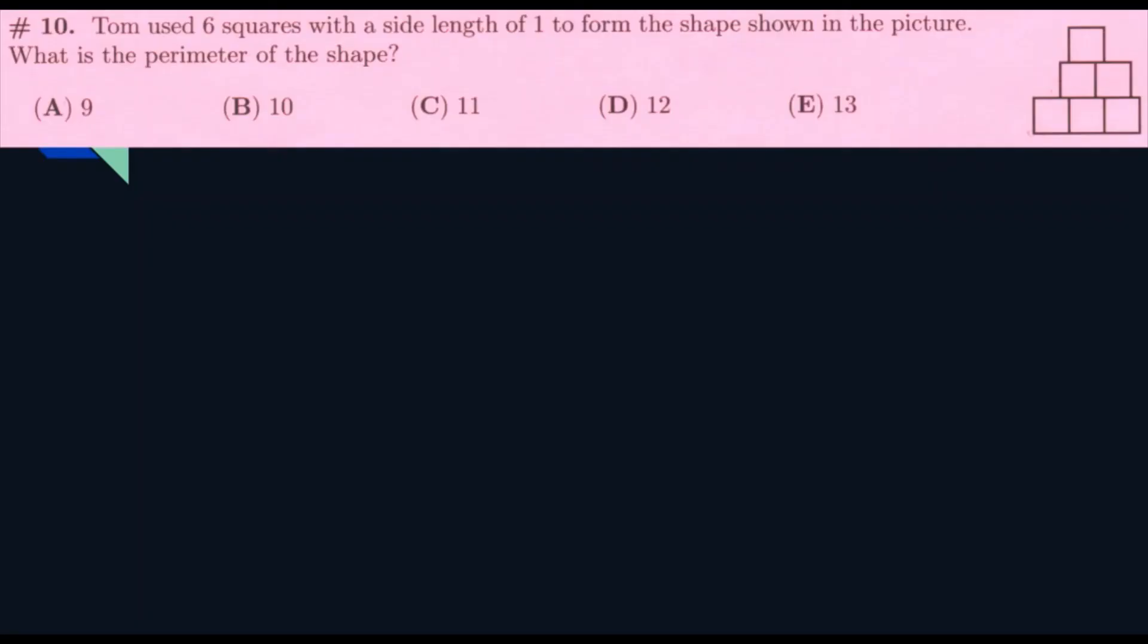Tom uses six squares with a side length of 1 to form the shape shown in the picture. What is the perimeter of this shape? So, it's 3 on the bottom, 3 on both sides, and 1 on the top. So, it would be 3 plus 3 plus 3 plus 1. That would get you 10. So, our answer is B, 10.